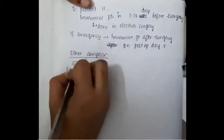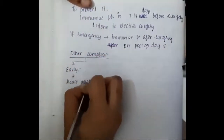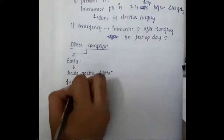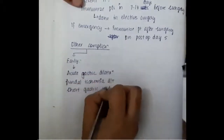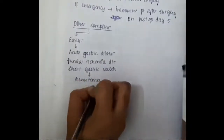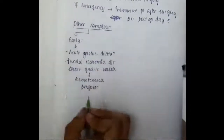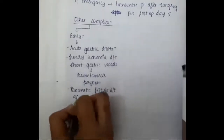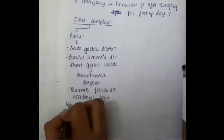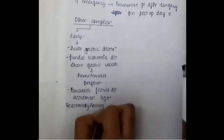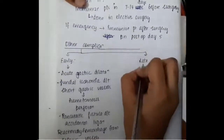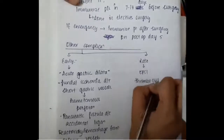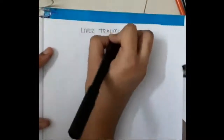Other complications are divided into early and late. Early complications include acute gastric dilatation, fundal ischemia due to short gastric vessels causing hematemesis and perforation, pancreatic fistula from accidental ligation, and reactionary hemorrhage from splenic vessels. Late complications include OPSI and thrombocytosis.